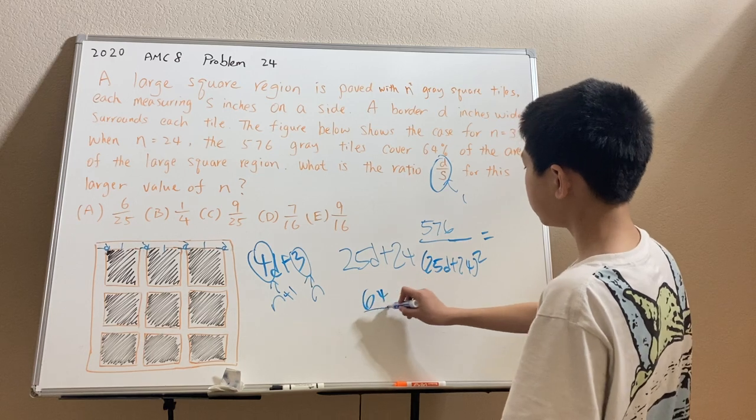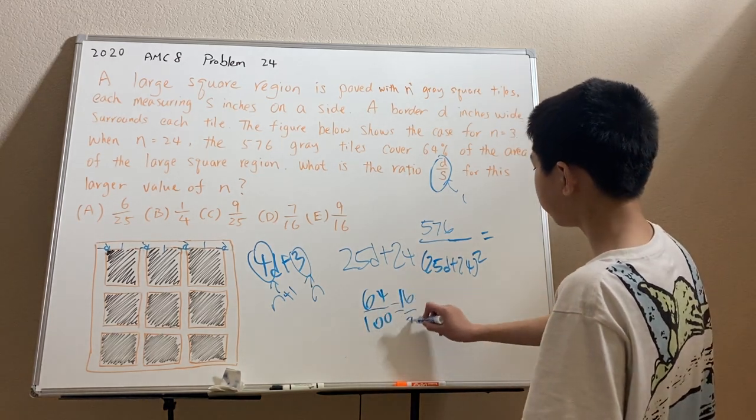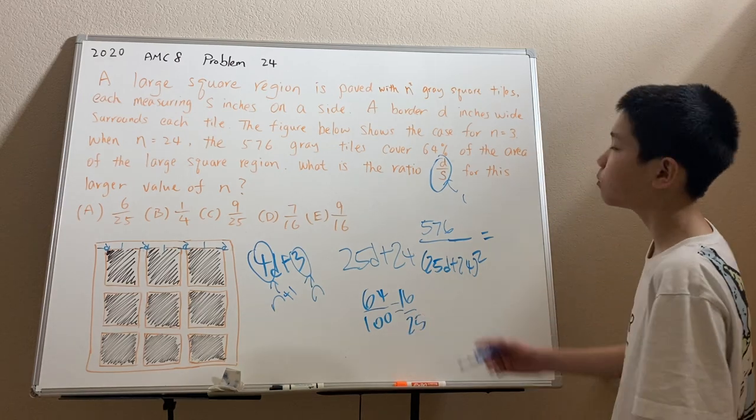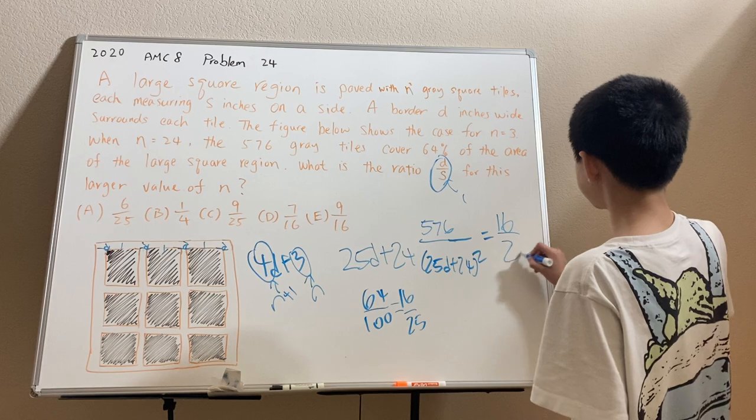And 64%, we can write it as 64 over 100, or it's equal to 16 over 25, if we divide the numerator and denominator by 4. So, that's 64%, or 16 over 25.